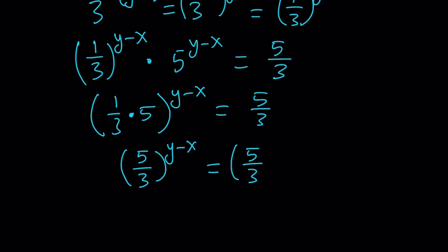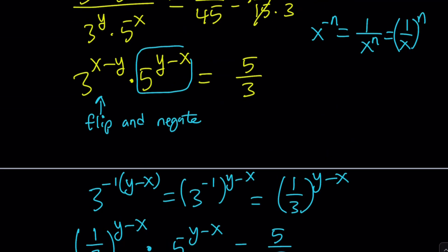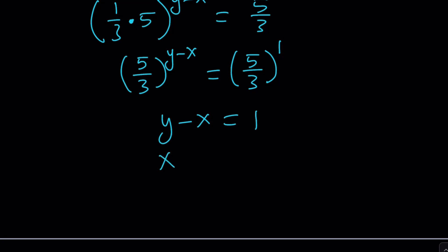And of course, this means 5 over 3 to the power 1. Therefore, from here you can conclude that y minus x is equal to 1. Is that going to help us? Absolutely. Take a look. We already had x plus y is equal to 3.